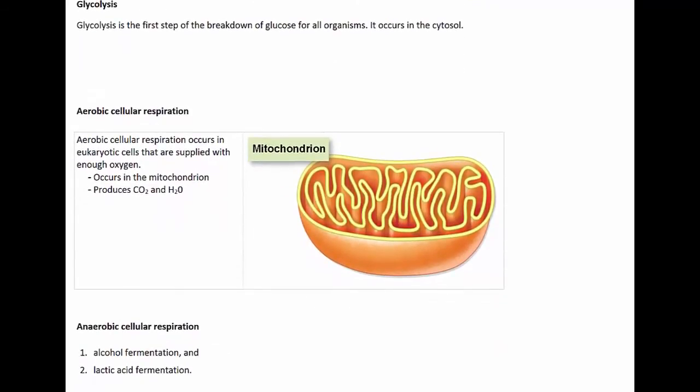For all organisms, the breakdown of glucose starts with a biochemical pathway called glycolysis. Glycolysis is an anaerobic process, which means it occurs in the absence of oxygen. Glycolysis takes place in the cytosol of cells. And this biochemical pathway is made up of 10 reactions, each of which is controlled by specific enzymes. Glycolysis breaks down glucose into two molecules called pyruvate and it also releases two ATP molecules.